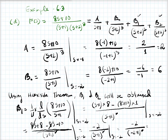Evaluating at s = -2: (-2+1) = -1, so (-1) squared = 1, giving -2/1 = -2. So B1 equals minus 2.